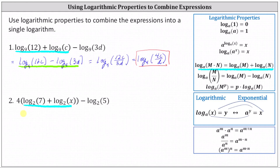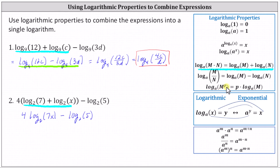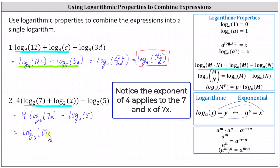Then if we multiply by four, we have four times log base two of 7X minus log base two of five. We need to be careful here — we cannot combine these two logarithms until the coefficient of the first log is equal to one. So we apply the power property: P times log base A of M equals log base A of M to the power of P. This means four times log base two of 7X can be written as log base two of (7X) to the fourth power, minus log base two of five.